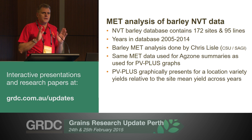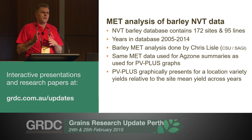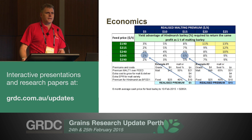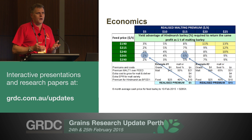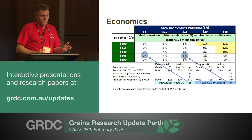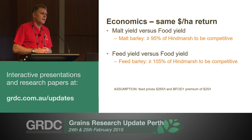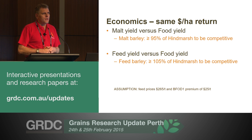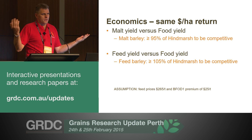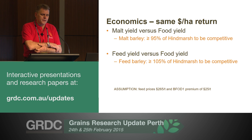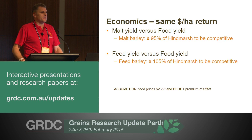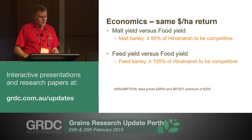What PV Plus does is take individual sites for individual locations and gives you the year-to-year variation in performance of varieties across a period of time. At current prices — about $2.65 a tonne for feed and a $25 per tonne premium for BFOD1 — malt varieties need to be within 5% or better of Hindmarsh to be competitive. For a feed barley, you need to yield at least 5% more than Hindmarsh to make the same return. So when you look at variety comparisons, just think about those benchmarks.